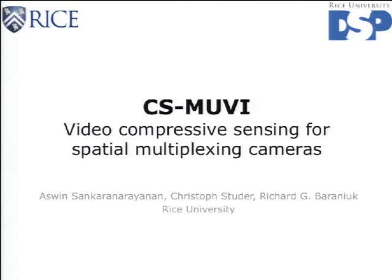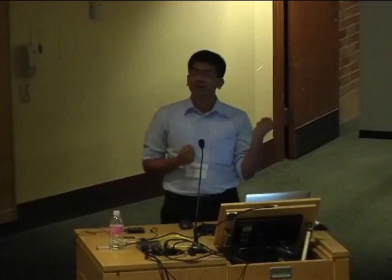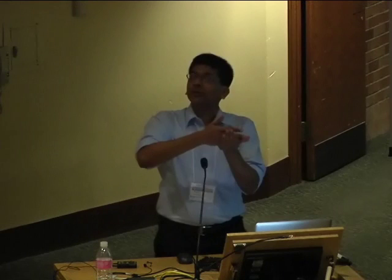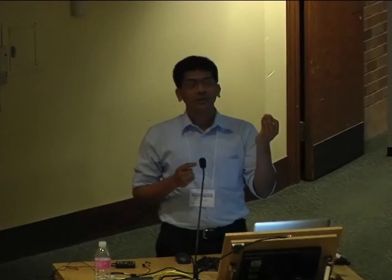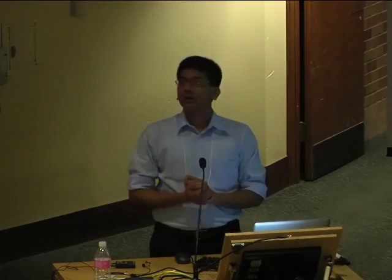You just heard Jason describe how to take a low-speed video camera (say 30 fps) and convert it to a high-speed camera (say 200 fps) by introducing a temporal code during each exposure. I'm going to talk about something complementary: cameras with very poor spatial resolution. We will introduce spatial multiplexing masks that convert a camera with low spatial resolution into one with high spatial resolution — broadly called spatial multiplexing cameras — and derive a video compressive sensing algorithm for them.